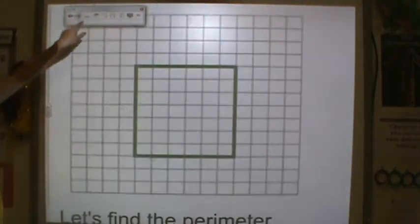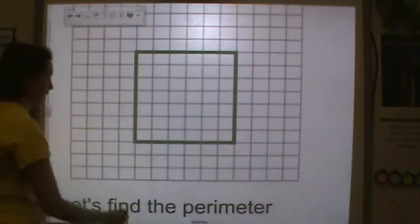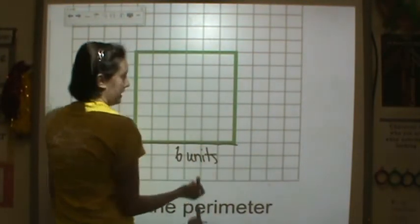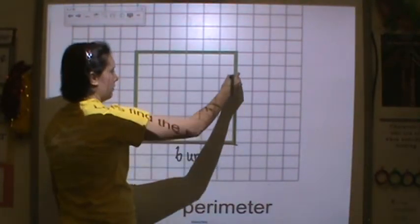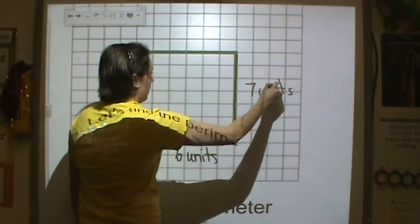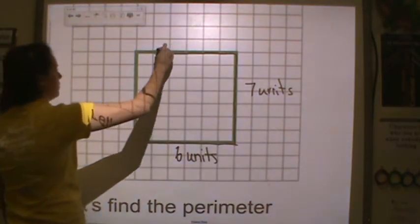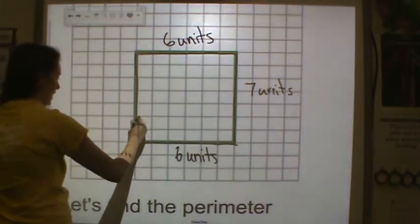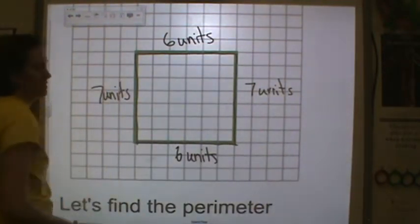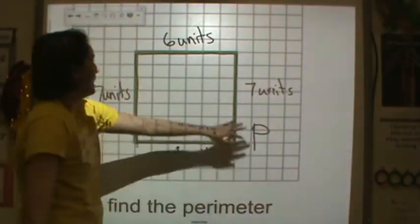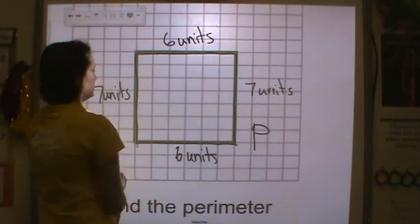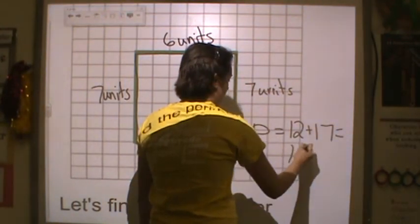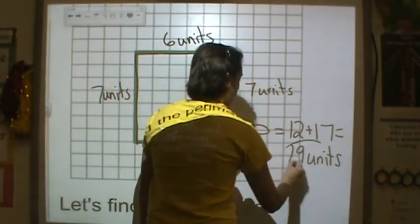Let's try another one. Let's find the perimeter of this shape. I'm going to count: 1, 2, 3, 4, 5, 6 units — my length on the bottom; 1, 2, 3, 4, 5, 6, 7 units on the left; 1, 2, 3, 4, 5, 6 units across the top length; and 1, 2, 3, 4, 5, 6, 7 units again across the side. So to find the perimeter P, we add all of these side lengths together: 6 plus 6 is 12, 7 plus 7 is 14, so 12 plus 14 is equal to 26 units for the perimeter.